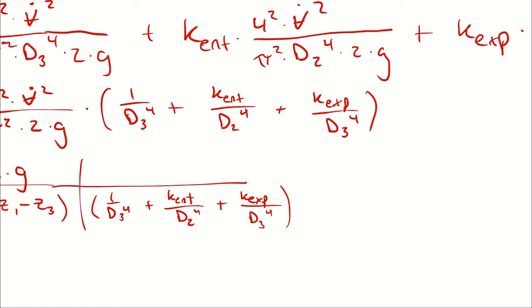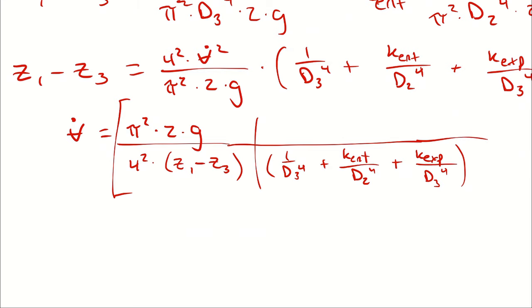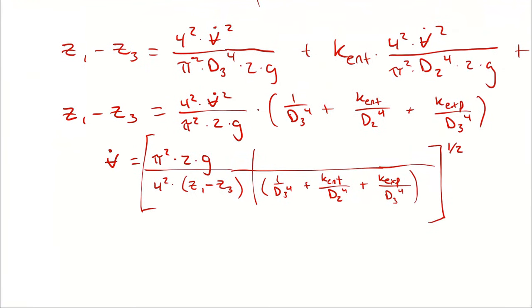If all diameters are in centimeters, I will make a conversion at the end from centimeters to the fourth power to meters to the fourth power to verify units cancel. Taking the entire quantity under a square root gives the volumetric flow rate. I know gravity, pi, Z1 minus Z3, and D2. To calculate the volumetric flow rate, I need to look up the loss coefficients for the entrance and for the expansion process, and calculate the diameter at state 3.